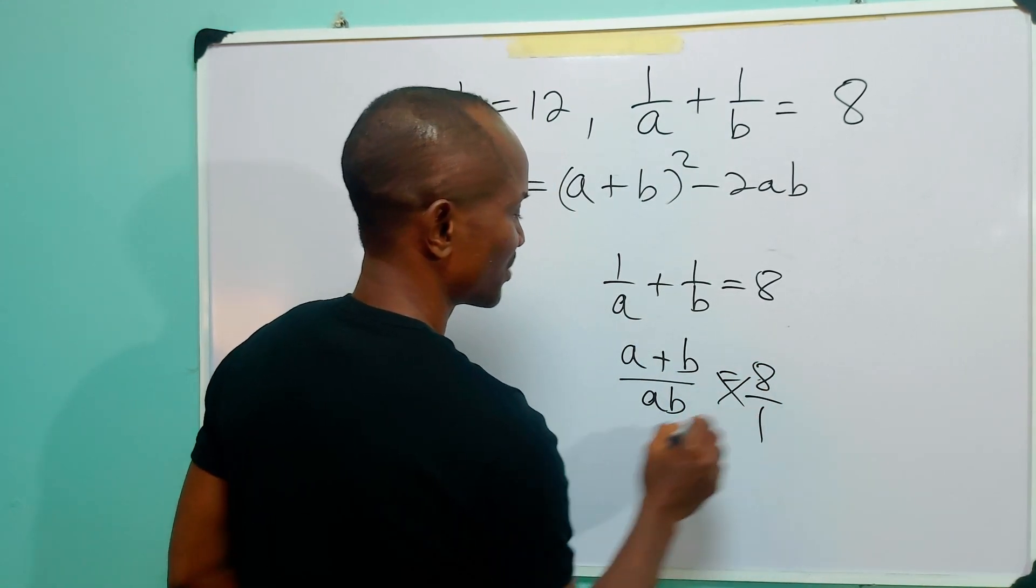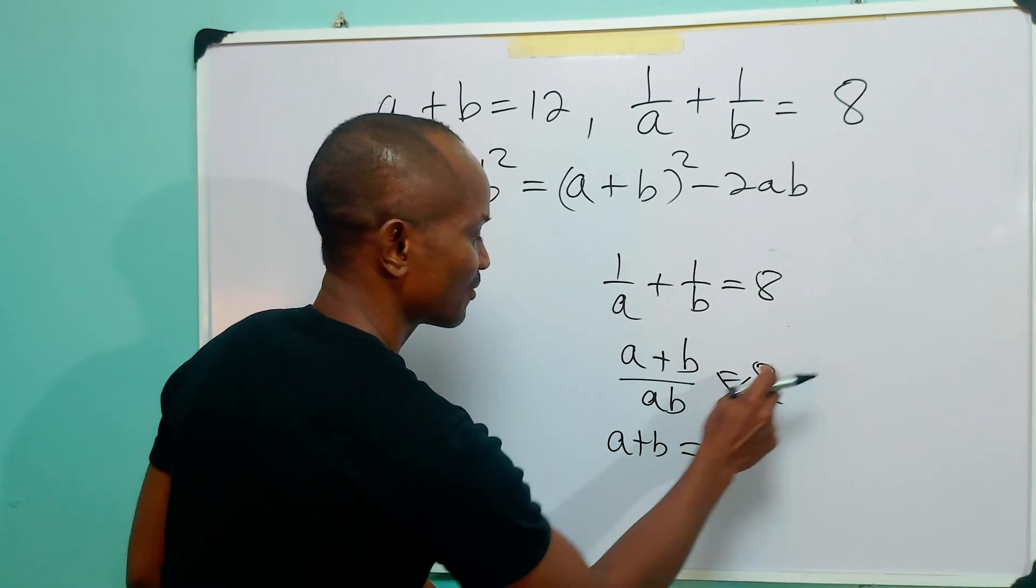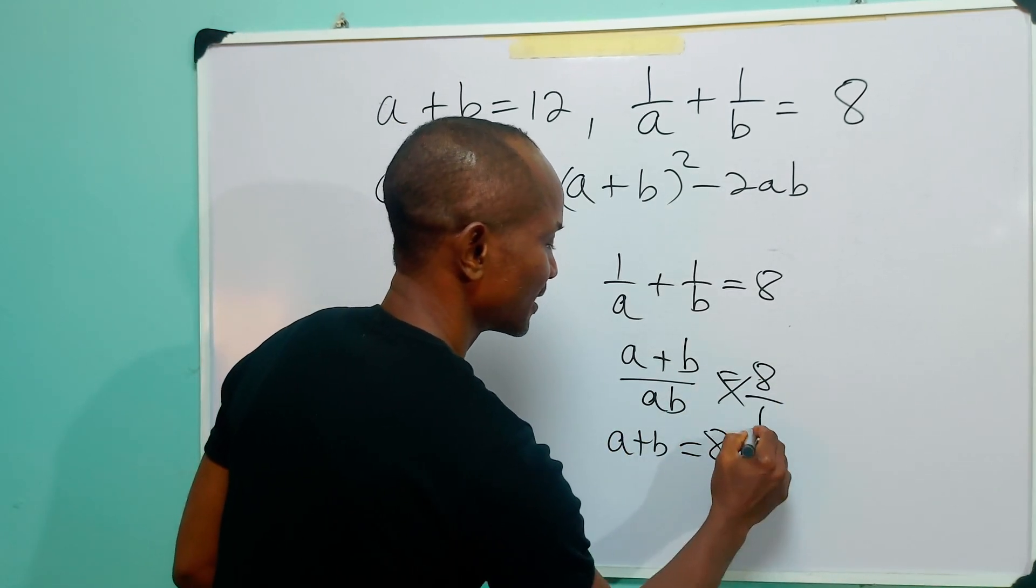Next we cross multiply. So we have that A plus B is equal to 8AB.